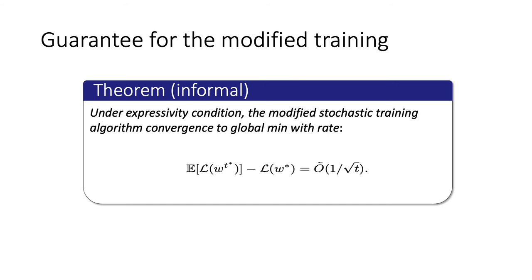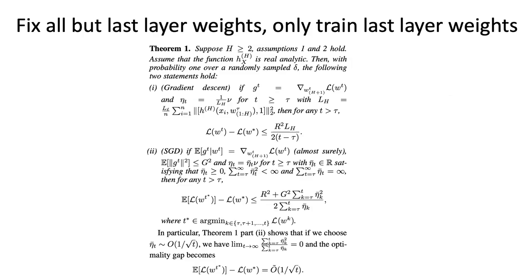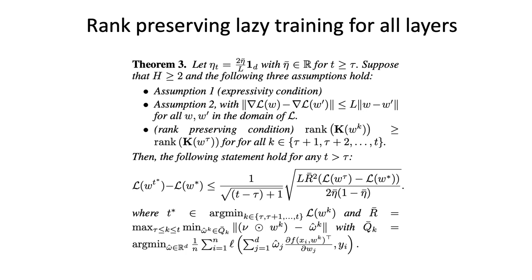With this expressivity condition and the two-phase modification algorithm, we have the following theorem. Informally, admitting some mild assumptions that would actually hold in real neural net training, the real condition is that under expressivity condition, if we use a modified stochastic training algorithm, then the algorithm would converge to global optimal with a rate of 1 over square root of t. There are two versions of our theorem. First is about fixing all but last layer weights and training the last layer weights in the second phase. The second is about the general rank-preserving lazy training for all layers. In both cases, the convergence rate is 1 over square root of t.